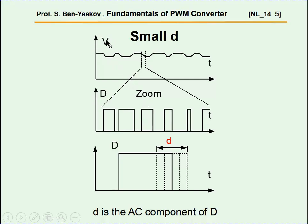Suppose this is the error amplifier output — this is the large signal, but it has a small signal on it. Consequently, we are going to have a duty cycle which is changing accordingly. If we look at it on the oscilloscope and synchronize to the edge, we'll see the duty cycle sort of moving back and forth. This is what we mean by the small signal of the duty cycle.